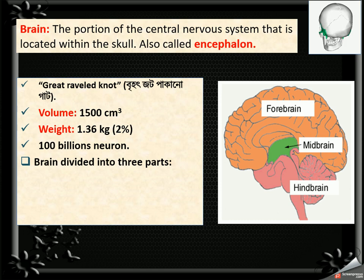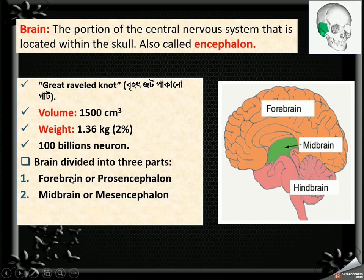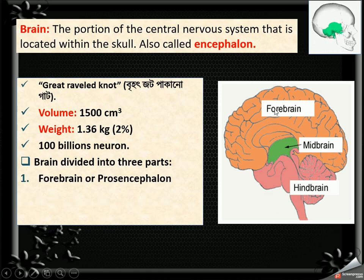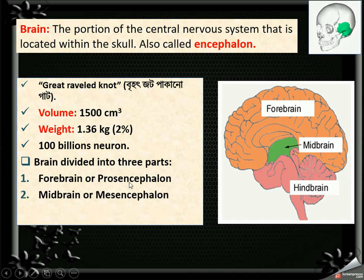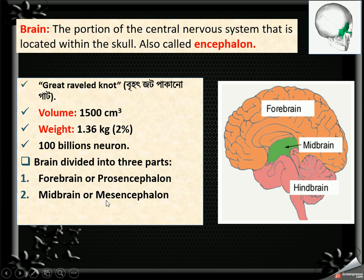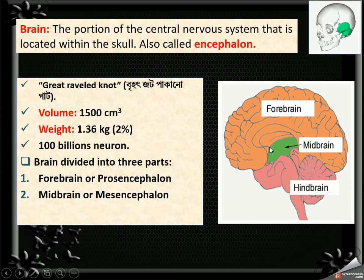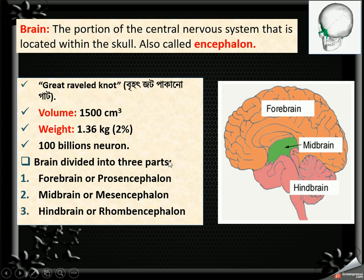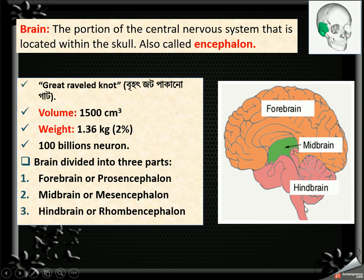The brain is divided into three parts. The first one is the forebrain, also called prosencephalon. Then the midbrain, also called mesencephalon. And the last one is the hindbrain, also called rhombencephalon.